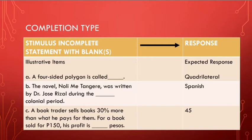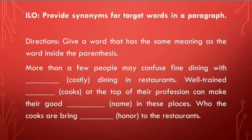For example C: 'A book trader sells books 30 percent more than what he pays for them. For a book sold for 150 pesos, his profit is blank pesos.' The answer is 45. Usually language teachers use this type to develop more than one skill — focusing on vocabulary and comprehension. This is a completion type of test.